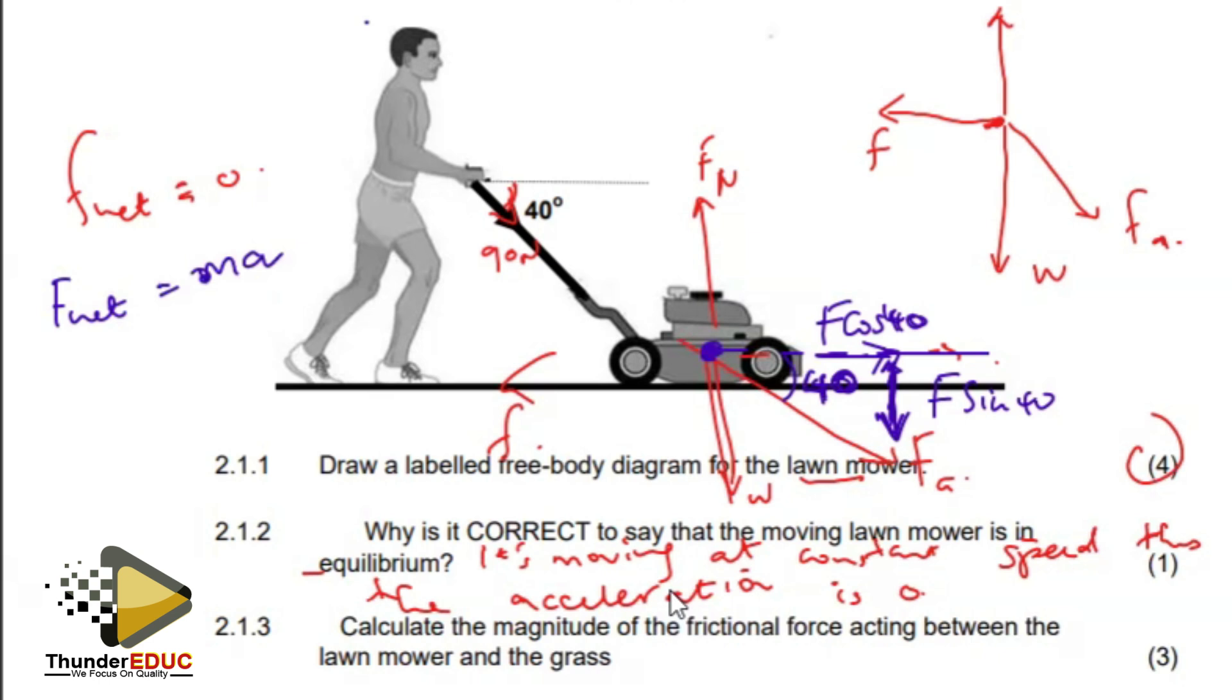My F cosine of 40 should equal my frictional force. That's 90 times the cosine of 40. When I put that into my calculator, I end up with 68.94. Since the direction of motion is just horizontal, then we focus on the horizontal component.